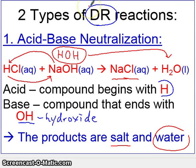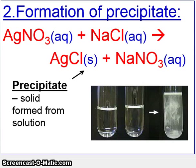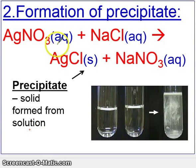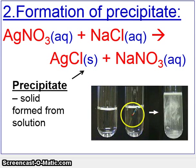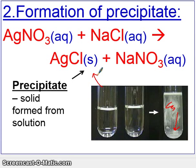Hopefully you can see how this is a double replacement reaction. Now let's introduce the second type, which is called the formation of a precipitate. A precipitate is a solid that is formed from solution. In this case, you begin with two aqueous solutions and form a solid as one of your products. You'll get two clear solutions, and when you mix them together, you'll get a white cloudy solution. That white cloudiness will eventually settle to the bottom and form your solid — essentially, you're forming a powder inside of two liquids.